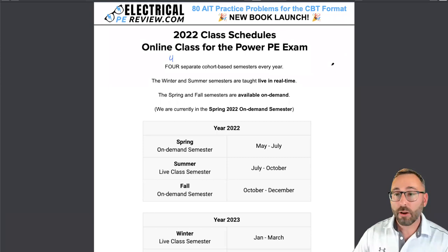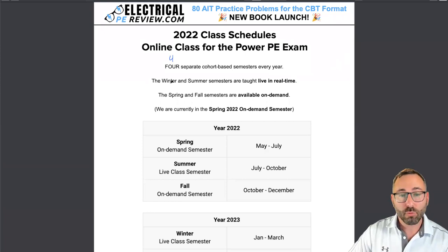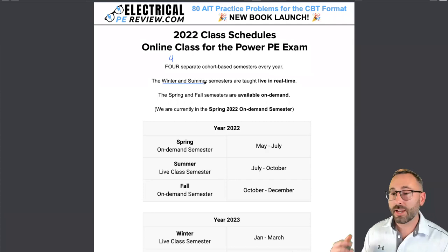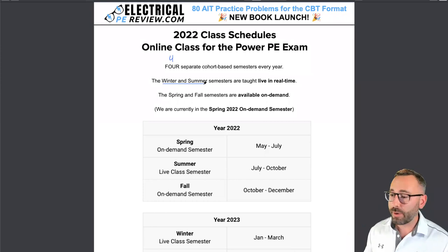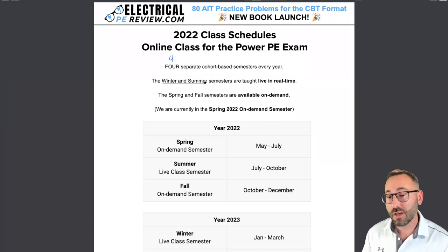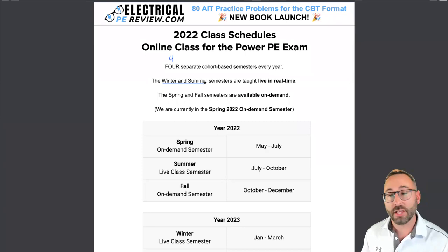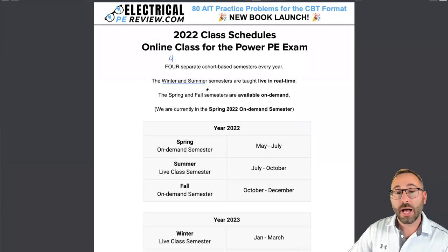Out of those four cohort-based semesters, two are taught live in real time — the winter and summer semesters. We connect twice a week for about 11 weeks, typically on Tuesdays and Wednesdays. I solve problems on the screen in real time and take questions live. It's very interactive and challenging, but also a lot of fun. I promise you will learn way more than you think possible in just an 11-week, up to three-month program — everything you can imagine about electrical engineering that you can apply to both the PE exam and your career.